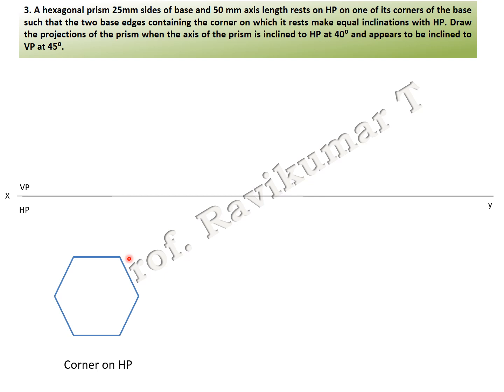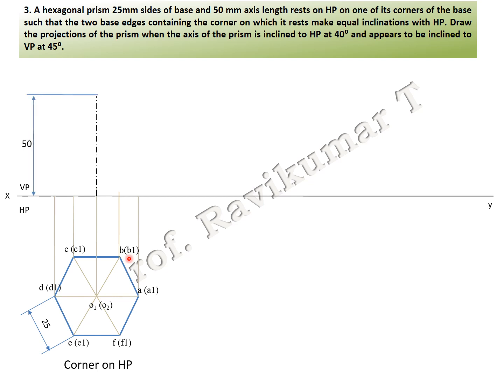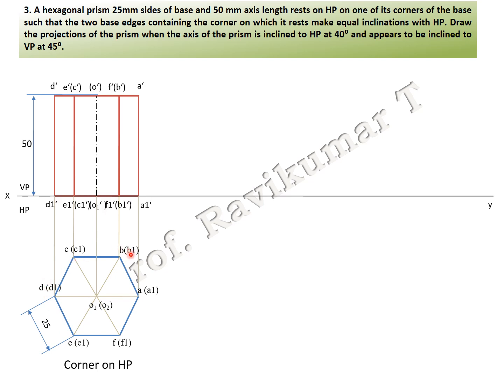For the corner position, looking from the top the hexagonal prism looks like a regular hexagon. A1 is the bottom face and A is the top face — bottom face is invisible, top face is visible. Draw the projection line upward, take axis length 50 mm, and complete the first projection. Looking from the bottom: A1, F1, E1, D1 are visible, but C and B are invisible. Name accordingly: A1, A, F1, F visible; B, B1, C, C1 invisible.